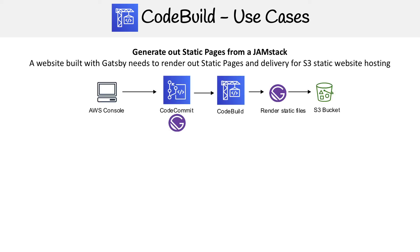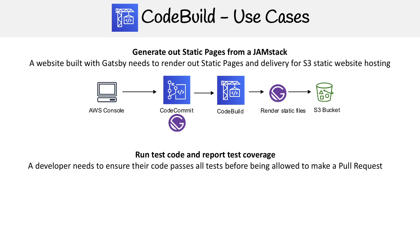So let's say we have our Gatsby code in CodeCommit. We could trigger CodeBuild from the AWS console — CodeBuild is going to pull from its source, which is CodeCommit. The build is then going to render out the static pages and output that artifact into an S3 bucket, so those pages are ready for static website hosting.